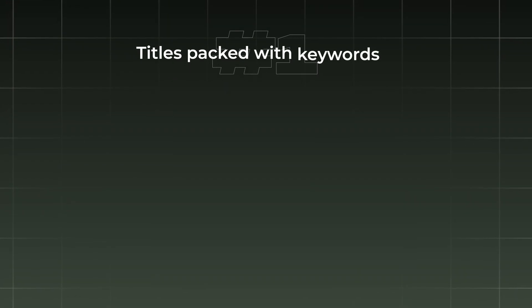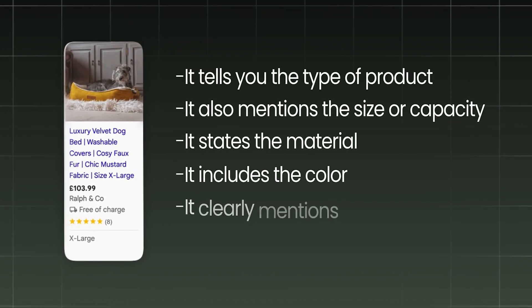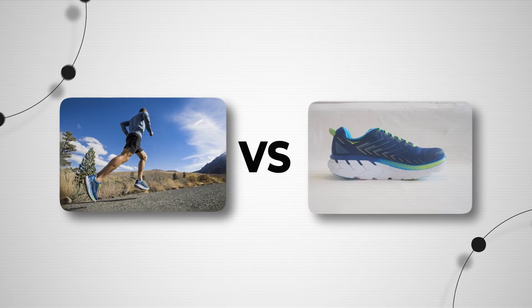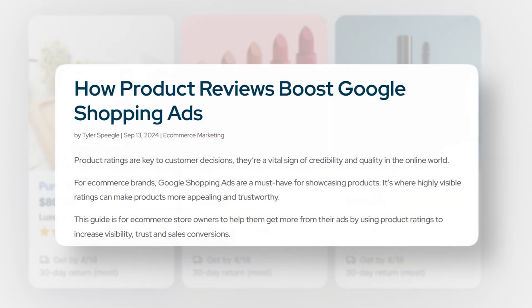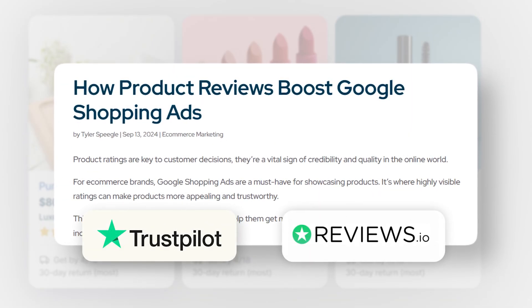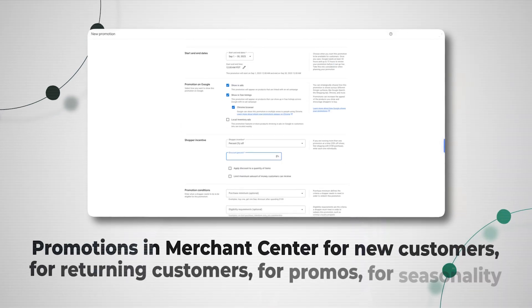If that data isn't optimized, Google has no idea how to match your products to searches. Here's what to focus on: title-packed keywords — include brand, product type, size, material, color, and actual search terms in your product titles. For images, test lifestyle versus studio images; depending on the account, one works better than the other, so double down on that. Use review extensions — pull through reviews from Trustpilot, Reviews.io, or your platform to show on shopping ads, building trust and improving click-through rate. And use Merchant Center promotions for new customers, returning customers, and seasonality.